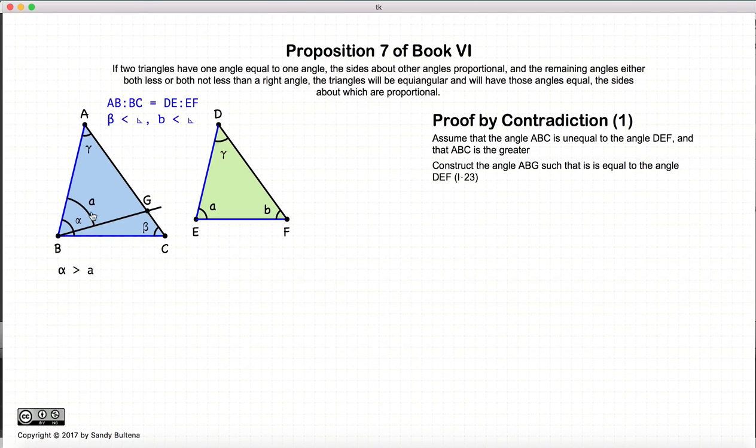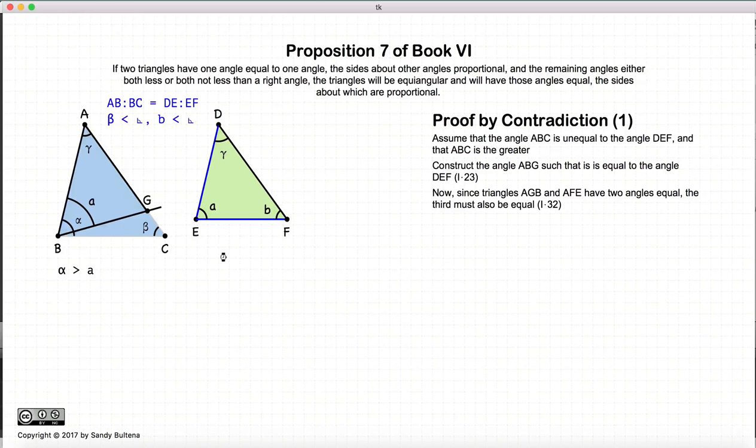We're going to draw a new angle here. So angle ABG will be equal to A, which is equal to DEF. So I have a triangle with gamma, A, and B. According to Proposition 32 of Book 1, this angle here has to be B, because all the angles add up to 180 degrees, and gamma and alpha were the same. So the third has to be the same. So now we have these two triangles are equal angular. According to Proposition 4 of this book, that means AB to BG equals DE to EF — the ratios about the equal angles are the same.